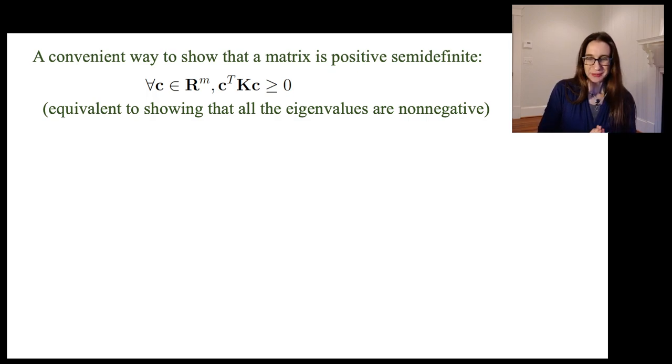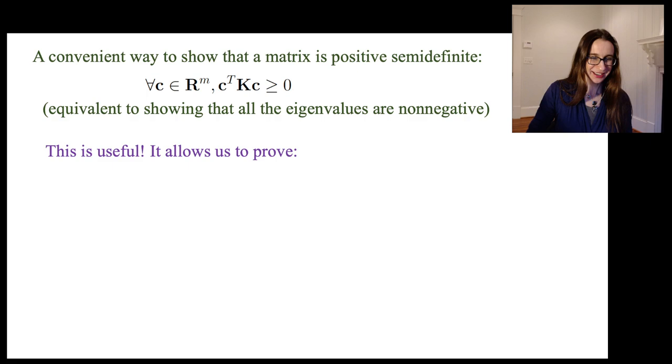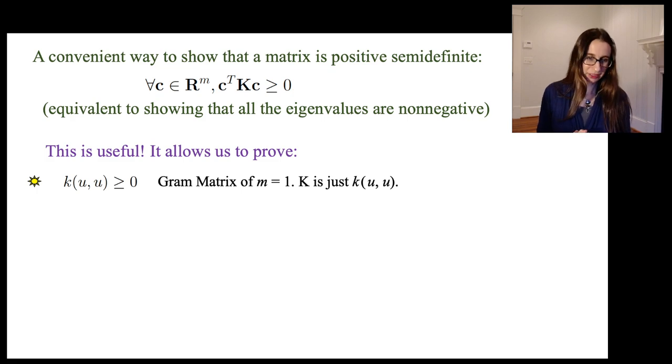So this is actually going to really help us a lot. It allows us to prove a bunch of stuff about k. The first thing we can prove is that if you take k(u,u) that is non-negative. How did I do that? Well, as it turns out, I just chose a gram matrix of one. I just chose one point in the space, which is u, and that gram matrix has to be positive semi-definite, and so the whole matrix K is just that one value, k(u,u).